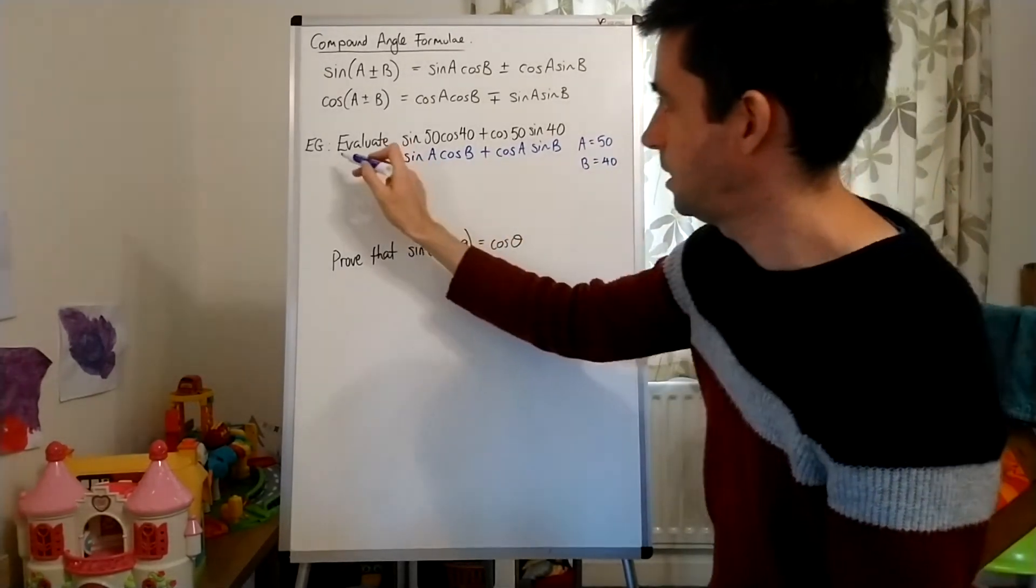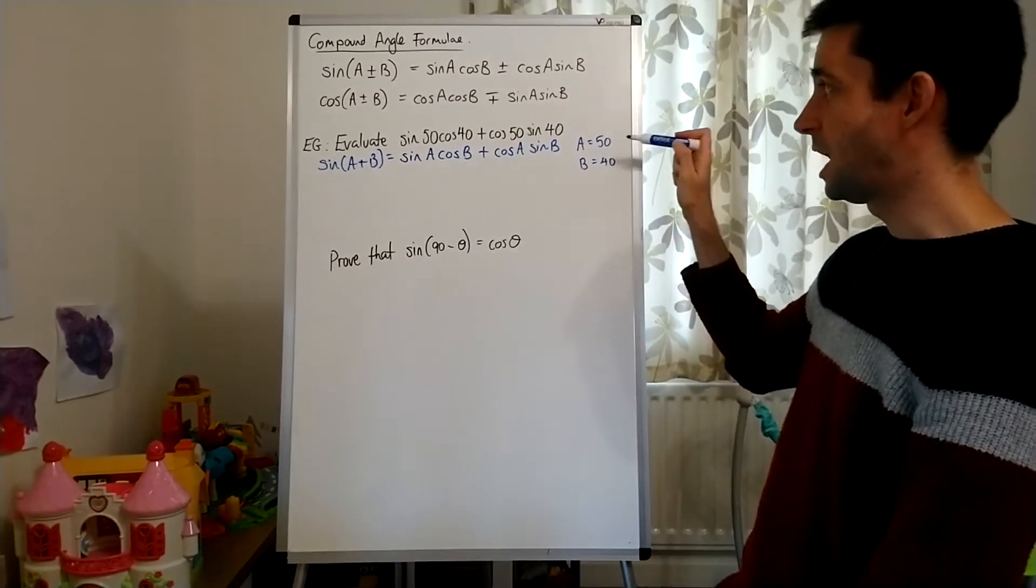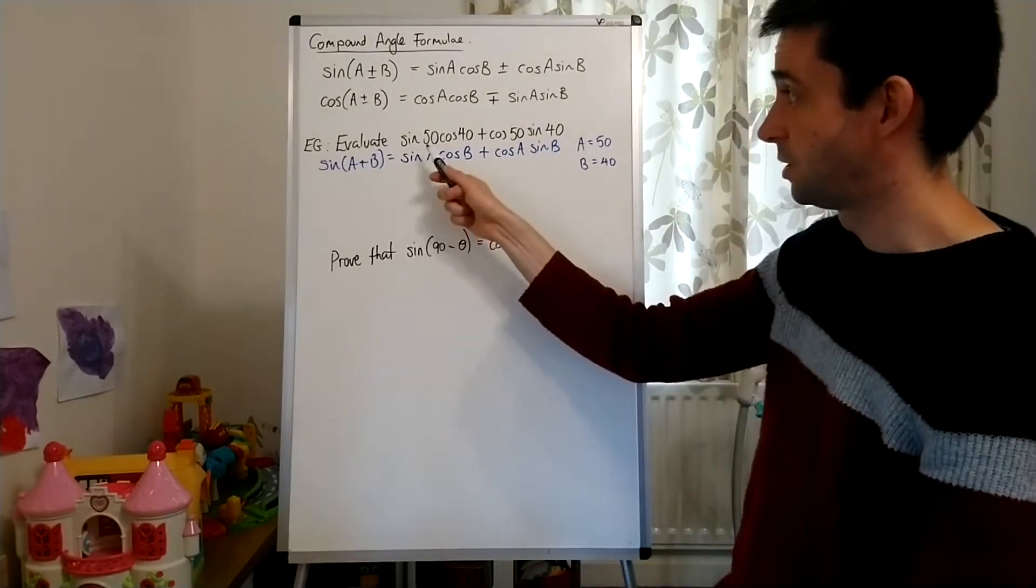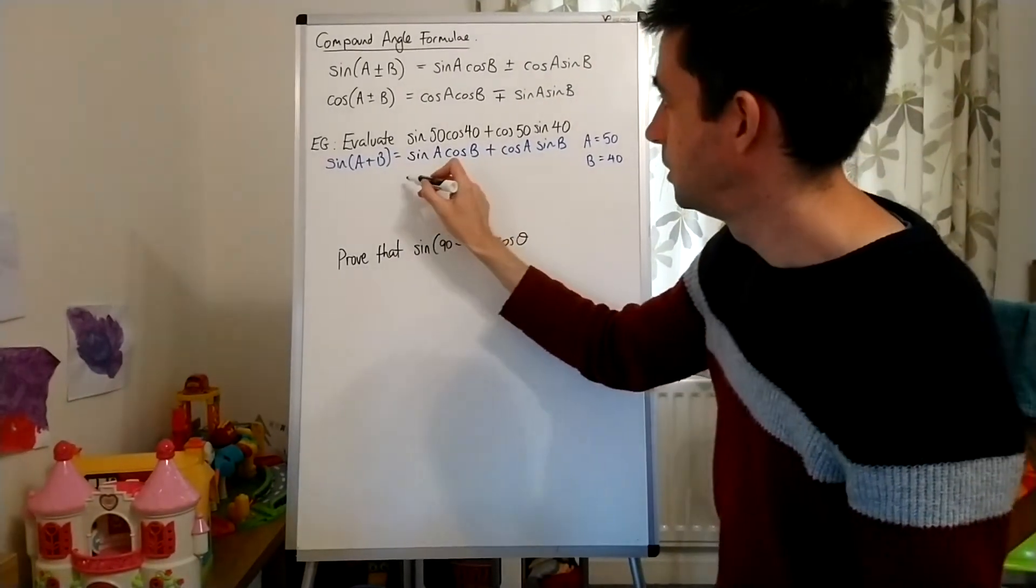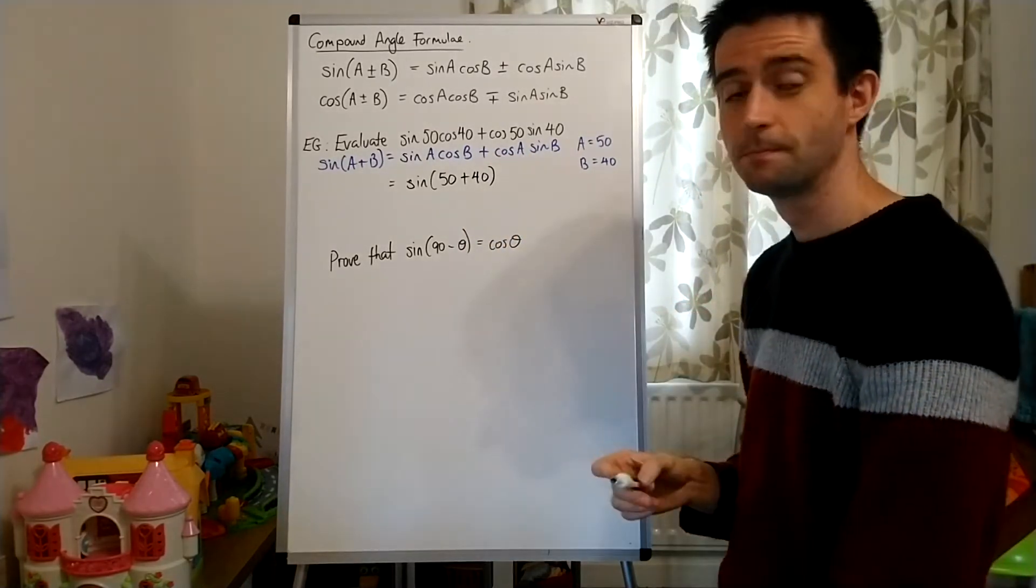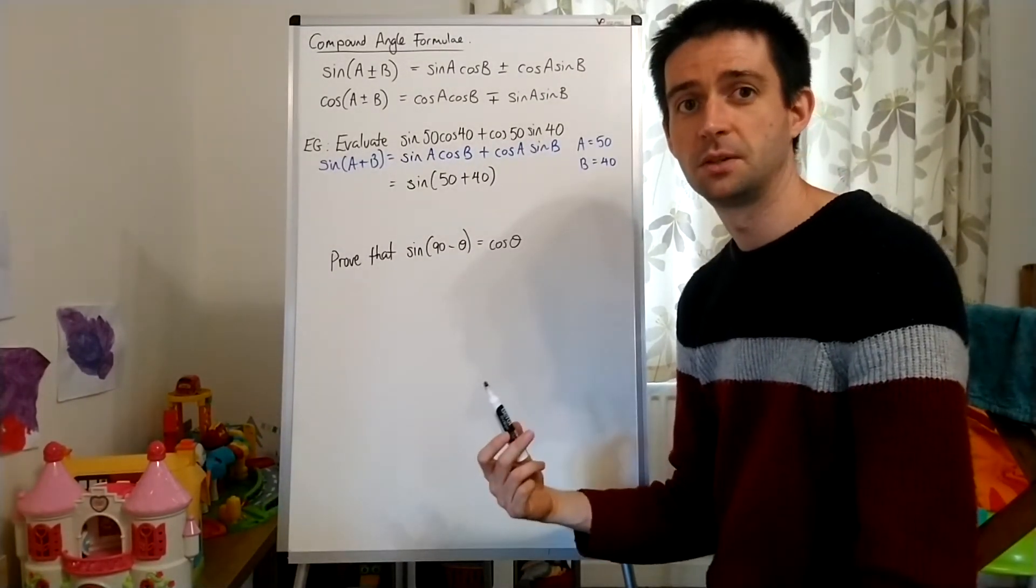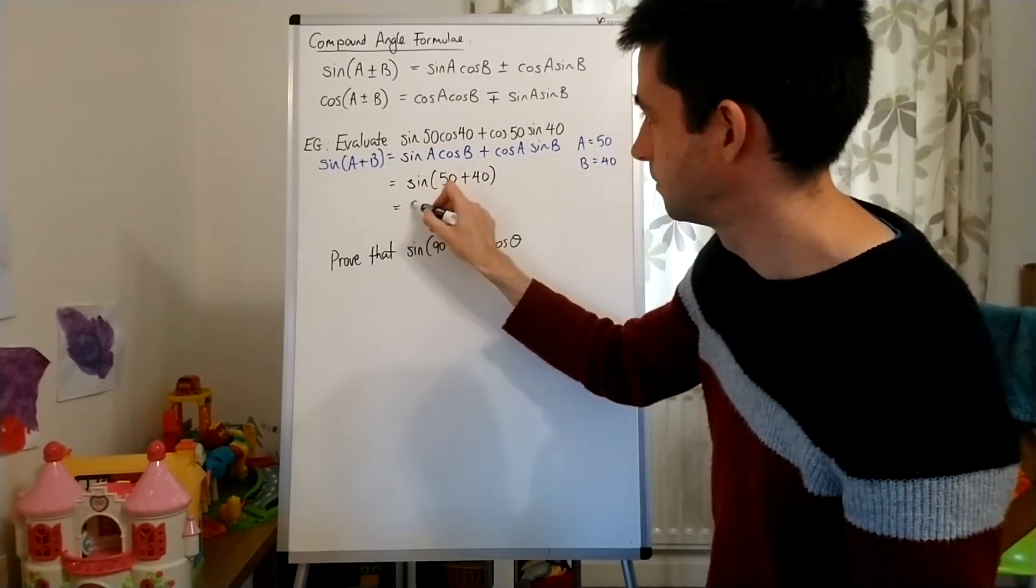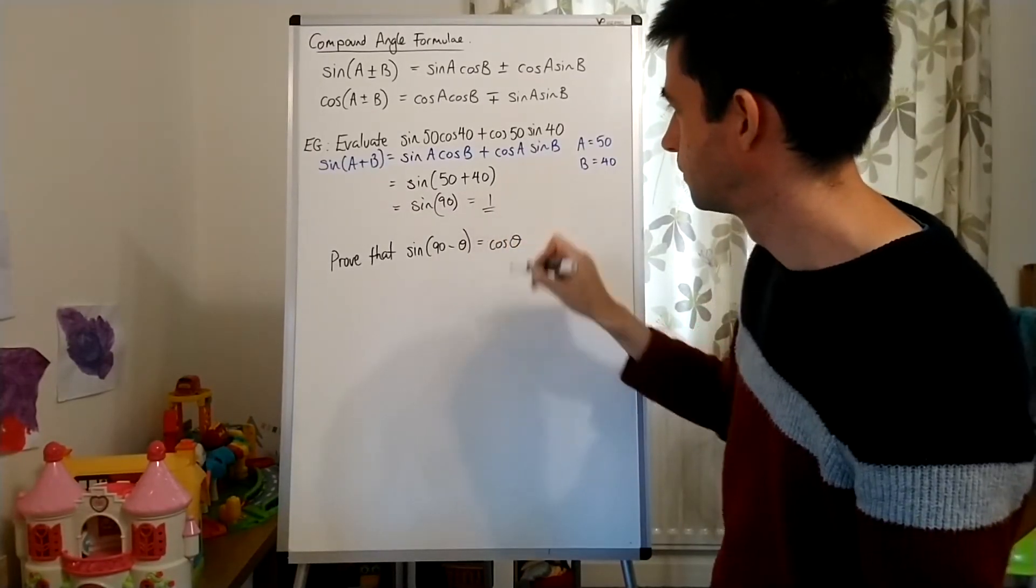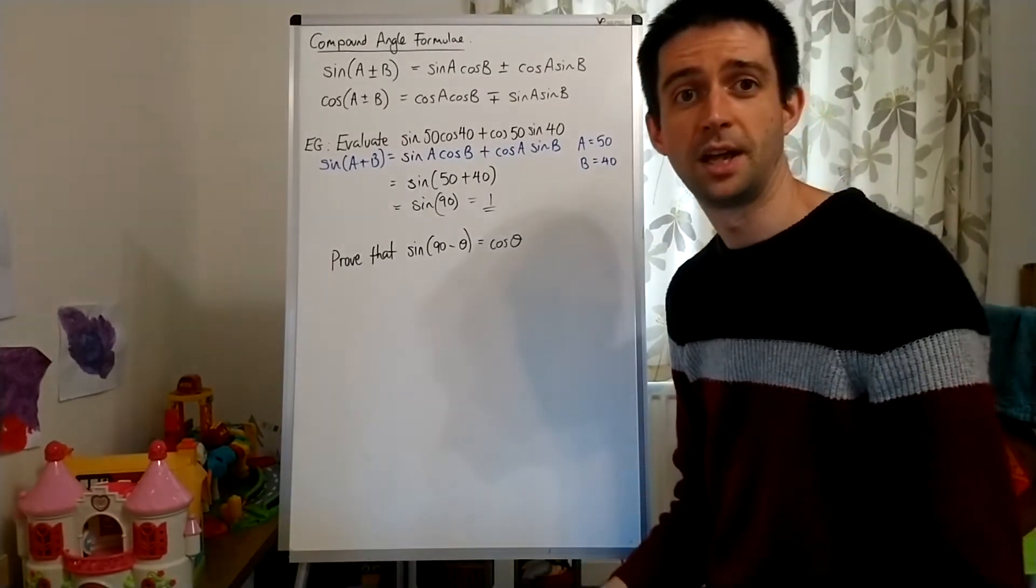Now, given that this identity here is the identity for sine of A plus B, and I now know that A is 50 and B is 40, I can simplify this expression here, sine 50 cos 40 plus cos 50 sine 40, to be sine, and then in a bracket, 50 plus 40. And the reason the question is asking me to evaluate is I can find a number that can be my answer for this question, because 50 plus 40 is 90. And as we know, sine of 90 in degrees is 1. So sine 50 cos 40 plus cos 50 sine 40 evaluates to 1, and you could check that on a calculator if you wish.